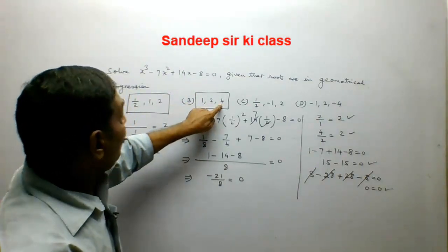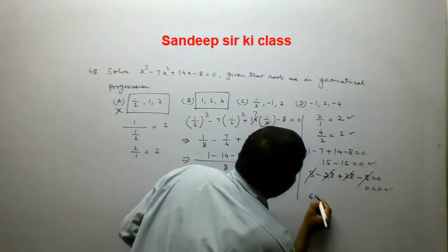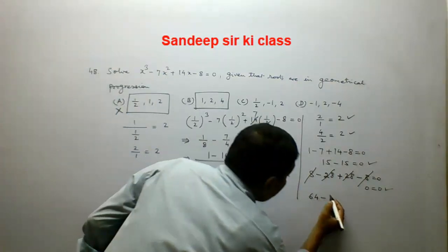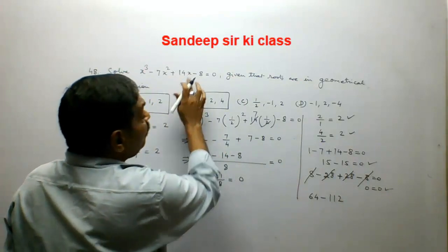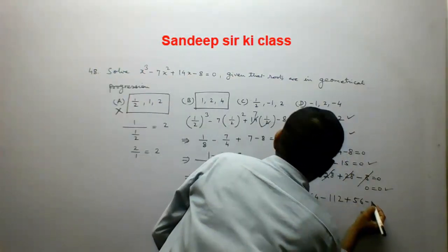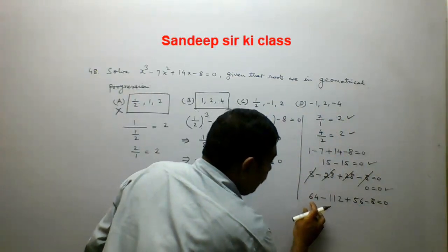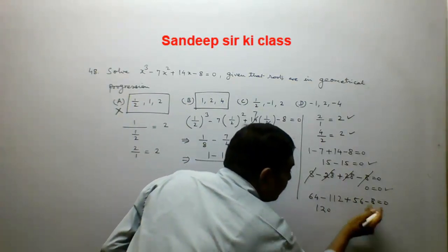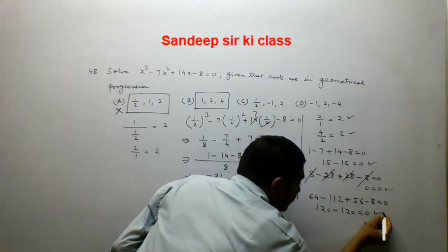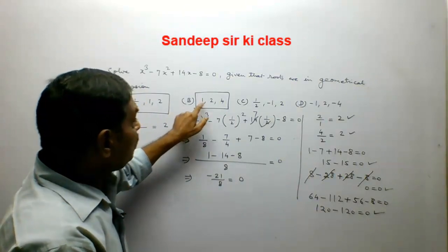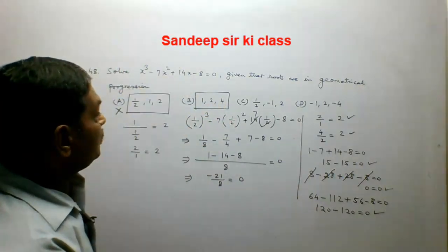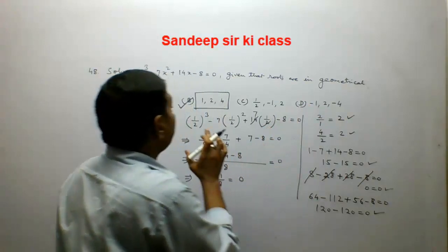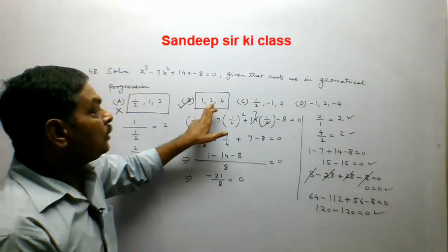Now putting x = 4: 64 minus 7 times 16 plus 14 times 4 minus 8 equals 64 minus 112 plus 56 minus 8 equals 0. That is 120 minus 120 equals 0, which is true. So 1, 2, and 4 all satisfy the equation. Option B is the correct answer — the roots are 1, 2, and 4.